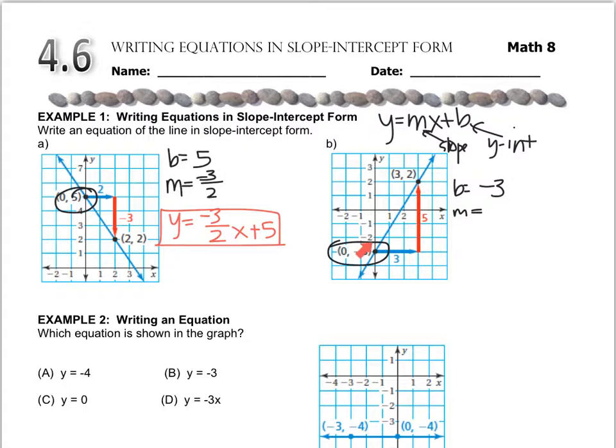So from (0, negative 3) over to (3, 2), I'm going to go up 5 and to the right 3. Both of those directions are positive, up and to the right are positive. So now we just merge it. Y equals 5 thirds x minus 3.